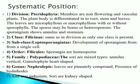The systematic position: the division is Pteridophyta. The characteristics of Pteridophyta are: members are non-flowering and vascular plants; the plant body is differentiated into root, stem, and leaves; the leaves are microphyllous or macrophyllous, with or without sporophylls; and the spores may be homo- or heterosporous. The sporangium shows annulus and stomium.